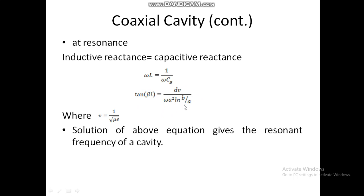Here v is the phase velocity, equal to 1/√(με). In free space this equals the velocity of light, 3×10⁸ m/s. The solution of this equation gives the resonant frequency of the coaxial cavity. Since the equation contains the tangent function, it has an infinite number of solutions with larger values of frequency. Therefore, this type of re-entrant cavity can support an infinite number of resonant frequencies or modes of oscillation.